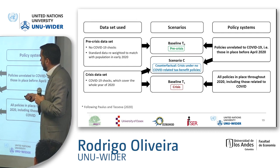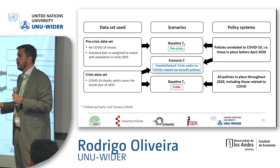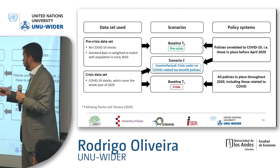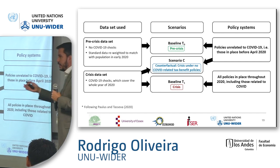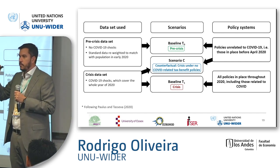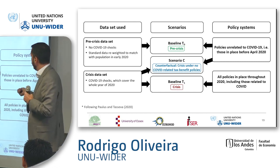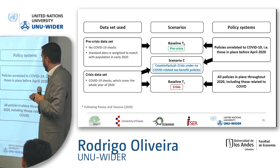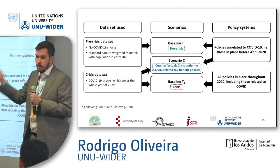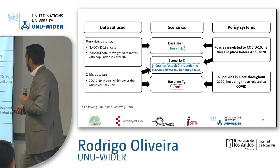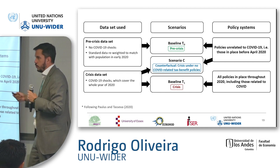The datasets are basically household surveys conducted by the government — micro data produced by those countries' governments. We apply shocks to the incomes of some individuals in those micro data to create a counterfactual dataset. Then we have another dataset — the shock dataset — after simulating the policies. The idea is: you need micro data, you need the policy systems, and you create different scenarios.